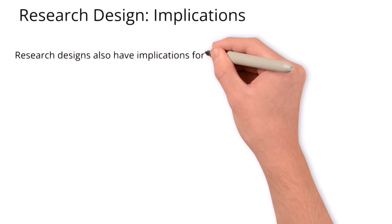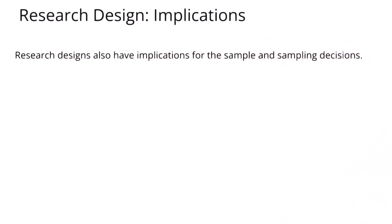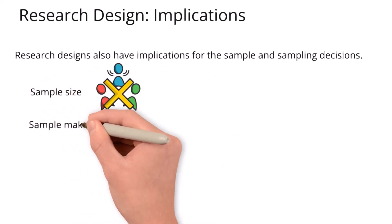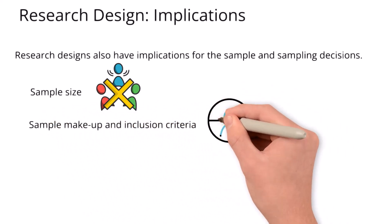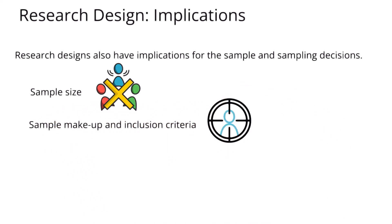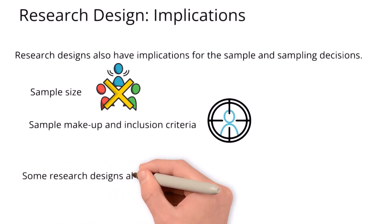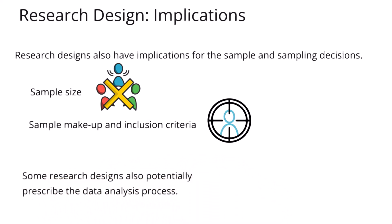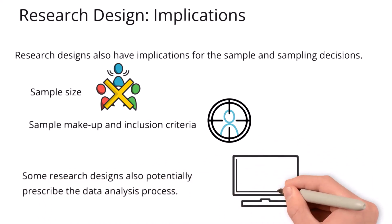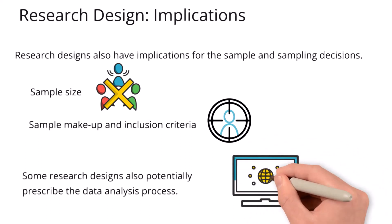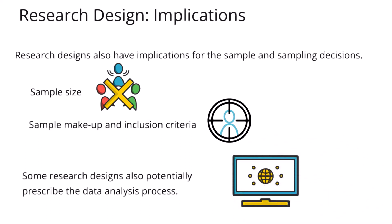The research design selected can also have implications for your sampling decisions, as different designs can be interested in the size or makeup of the sample — for example, wanting a sample made up of people with different perspectives on the phenomenon being researched. Some research designs, such as Q methodology, also prescribe the data analysis process and method, detailing not only how you will collect the data but also how you will analyse it.